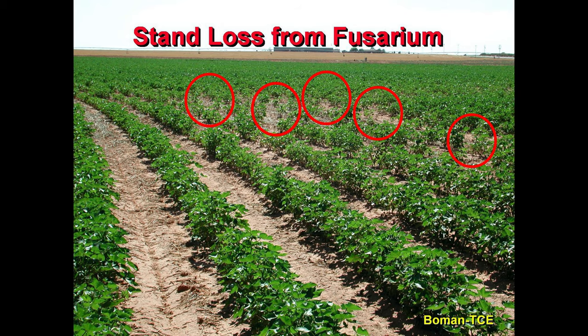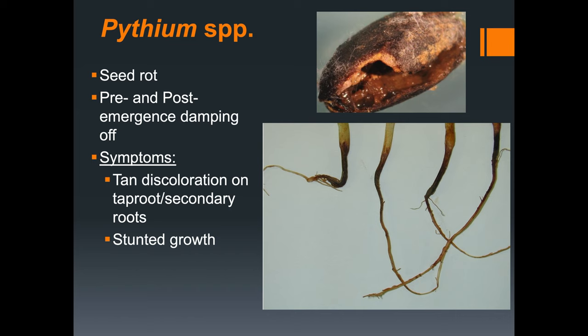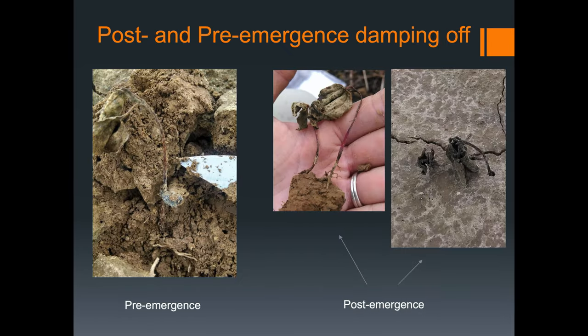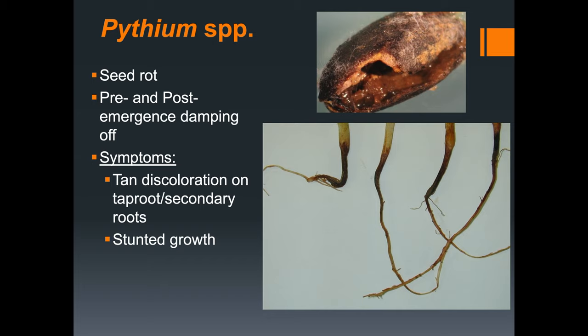The last pathogen known to cause cotton seedling diseases in Tennessee is Pythium species. Pythium species are most commonly associated with pre- and post-emergent damping off. They can also cause a seed rot which prevents germination overall. When looking at the root system, it is very common for the roots to look tan in discoloration as well as water soaked.